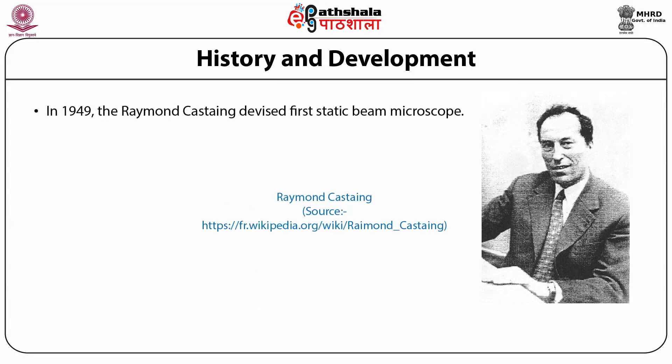EDX involves many other scientists too. In 1949, Raymond Castaing devised the first static beam electron microscope. An electron microscope is a type of microscope that uses a beam of electrons to create an image of the specimen. It is capable of much higher magnification and has a greater resolving power than an optical microscope, allowing us to see much smaller objects in finer detail. They are large, expensive pieces of equipment, generally standing alone in a specially designed room and requiring trained personnel to operate them.